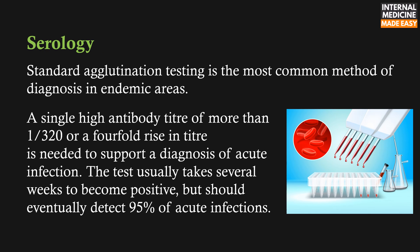Standard agglutination testing is the most common method of diagnosis in endemic areas. A single high antibody titer of more than 1:320 or a fourfold rise in titer is needed to support a diagnosis of acute infection. The test usually takes several weeks to become positive but should eventually detect 95% of acute infections.